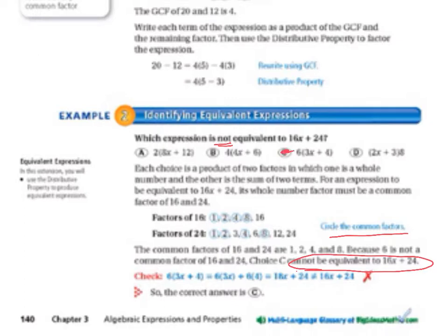And then it says check. So, we should always check our answer. So, we're going to multiply it out. So, 6 times 3x plus 4, 6 times 3x plus 6 times 4 equals 18x plus 24. That does not equal 16x plus 24. So, the correct answer is C.